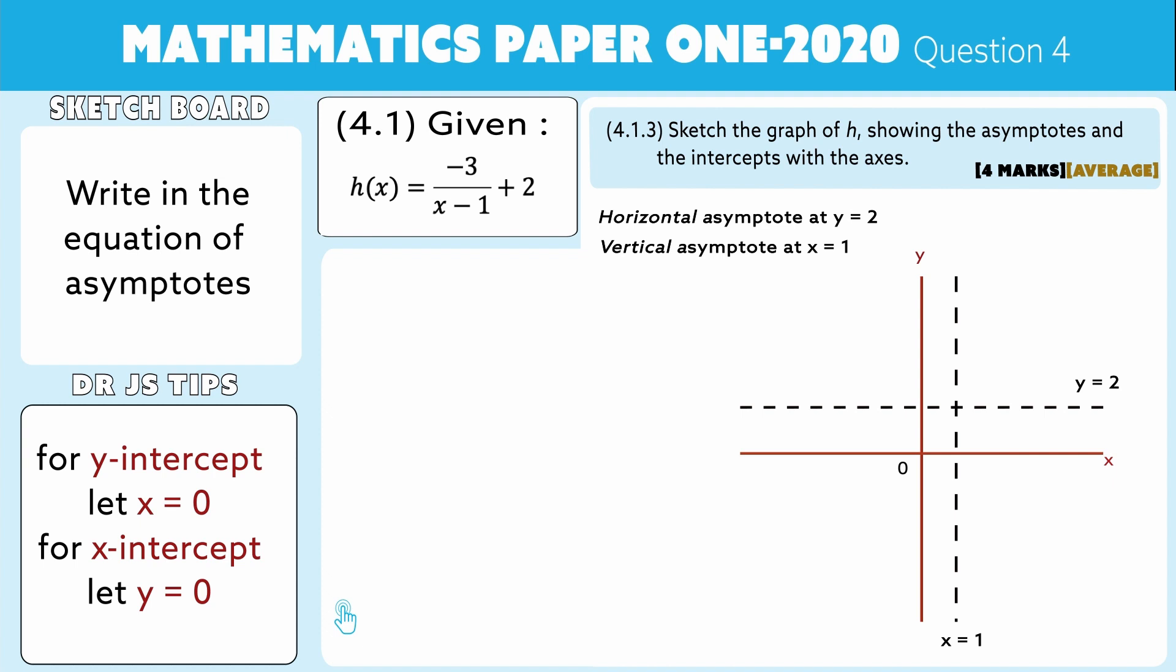We know that the equation for this hyperbola is H(x) = -3/(x-1) + 2. So for the x-intercept, we let y equal 0.